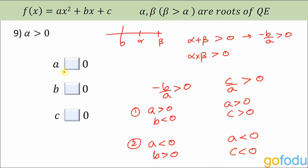So in both cases, the sign of a is the same as the sign of c: if a > 0 then c > 0, and if a < 0 then c < 0. Also in both cases, the signs of a and b are opposite in nature: if a > 0 then b < 0, and if a < 0 then b > 0.